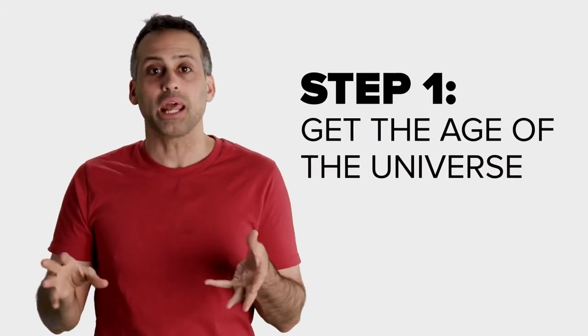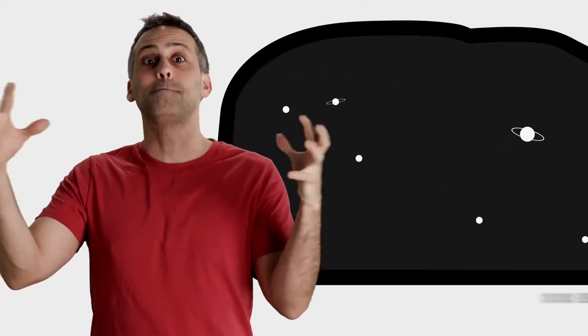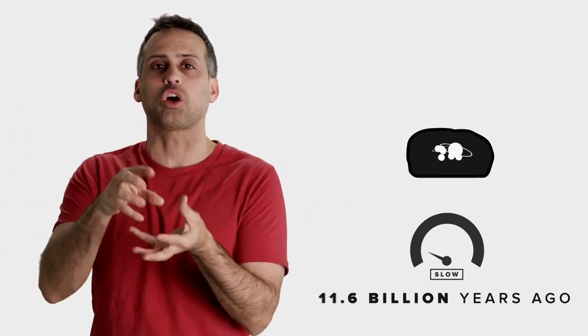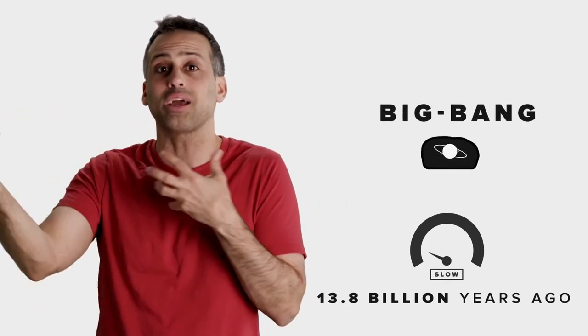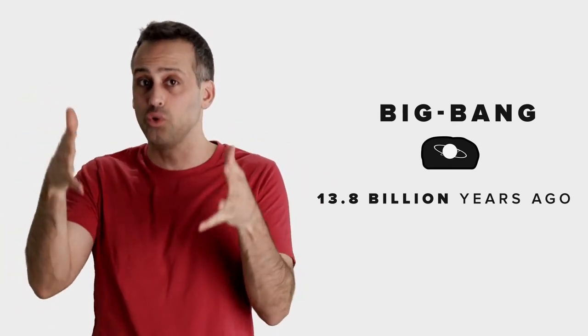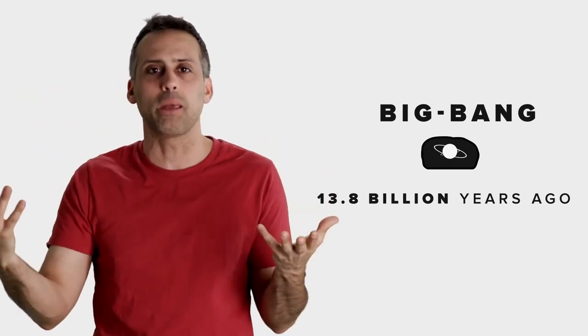So let's go back to the raisin bread. If we run the movie of the rising dough backwards, at the rate given to us by the expansion history, eventually nearby raisins will sit on top of each other. That is the big bang. And how long it takes to get back to this point is the current age of the universe. Our best current estimate, using that expansion history, is 13.8 billion years, give or take.